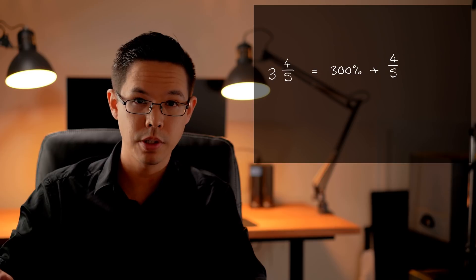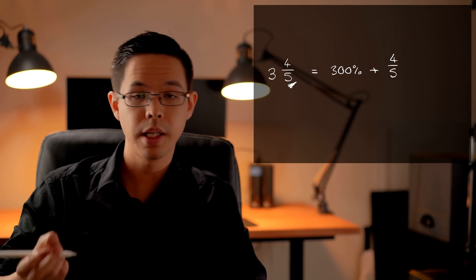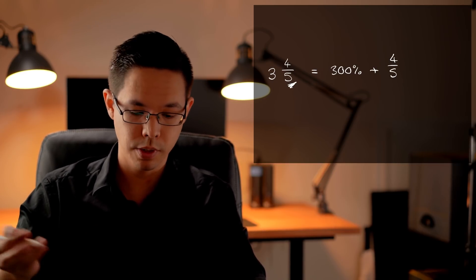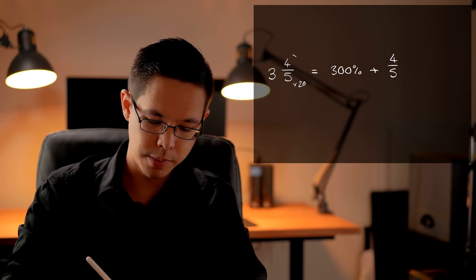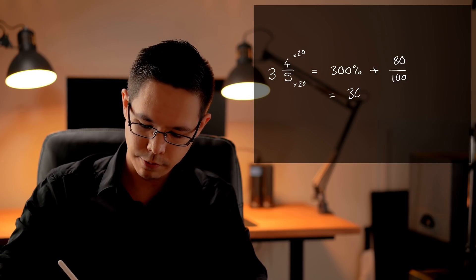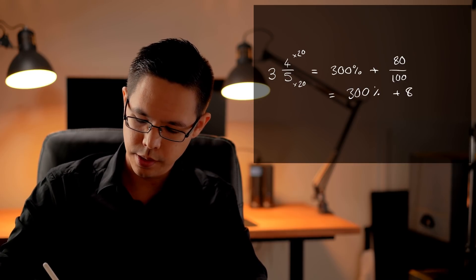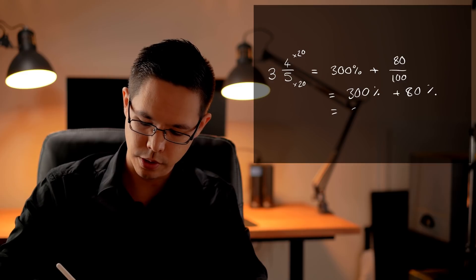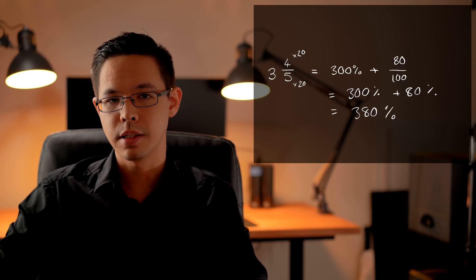Now for this trick to work I might do the equivalent fraction strategy because the denominator here is easily multiplied up to 100. So if I times that by 20 times the top by 20 I will get 80 this time out of 100 so I've effectively got 300% plus 80% so I'm going to have a total. 380% is the final answer.